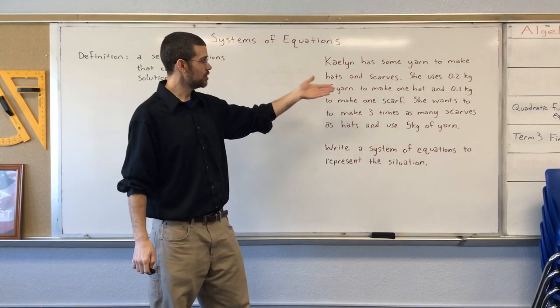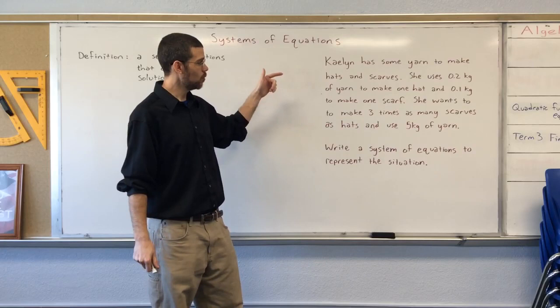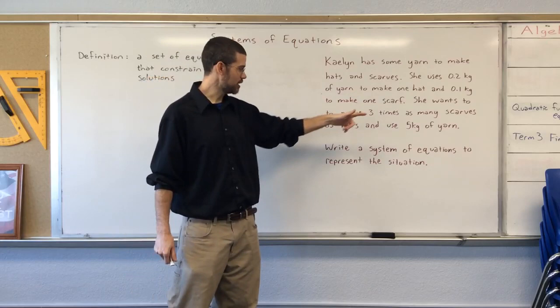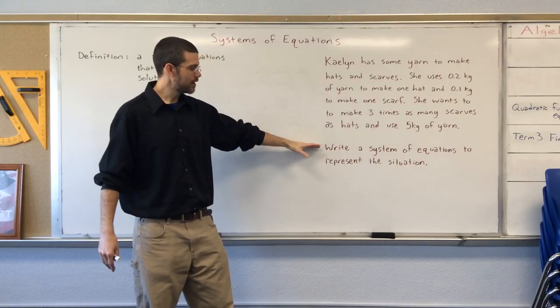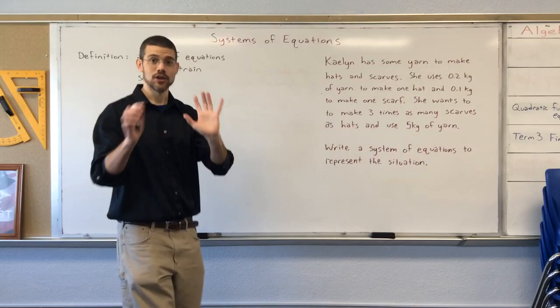We have Kalen. She has some yarn to make hats and scarves. She uses two tenths of a kilogram of yarn to make one hat and one tenth of a kilogram to make one scarf. She wants to make three times as many scarves as hats and use five kilograms of yarn to do it. They gave us quite a bit of information in that little paragraph and they tell us, write a system of equations to represent the situation.